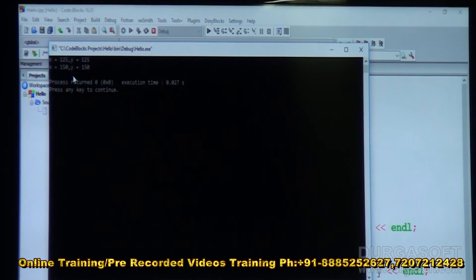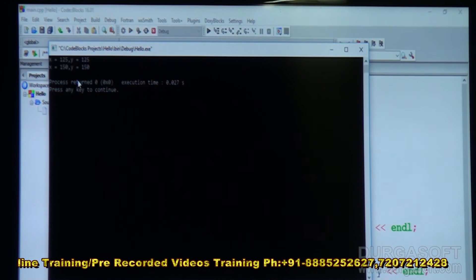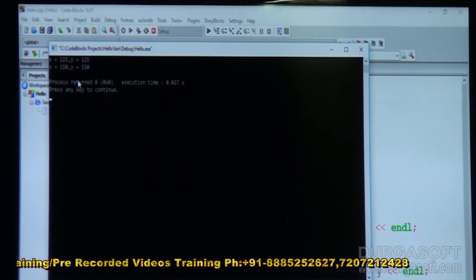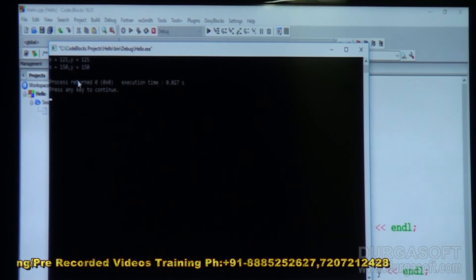So initially x value is 125. Same thing displayed by y. And next we changed x value. X value using y. We made it 150. That reflects automatically in x also. So this is what is called reference variables.